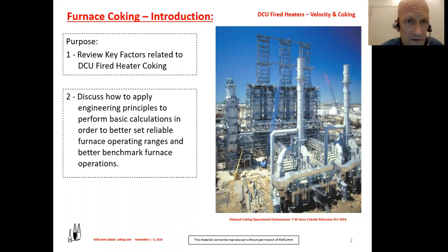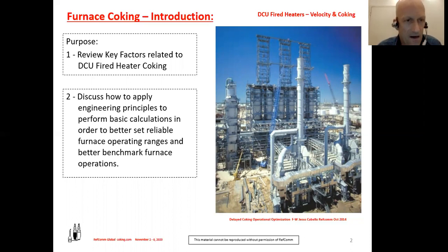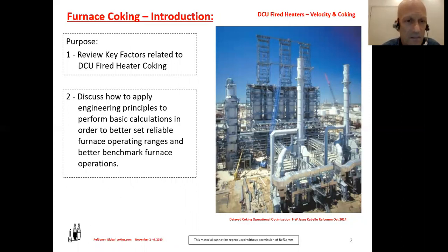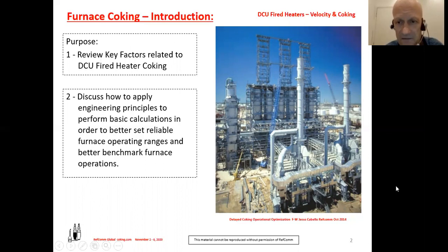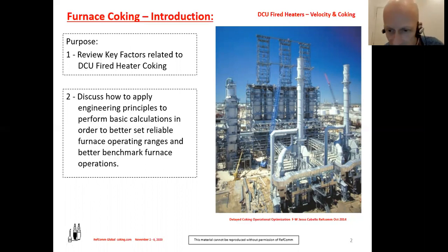We're going to review key factors that play into coking of delayed coker furnace tubes. There are many factors, and we will not be discussing many of them in any detail whatsoever. I'll also be discussing, as a key aspect of the presentation, how to apply engineering principles to perform basic calculations in order to better set reliable furnace operating ranges and to better benchmark furnace operations throughout your company or the industry. On this slide, you also see a photo of a basic delayed coker unit — a six-drum coker with two furnaces in the foreground and a main fractionator, courtesy of a presentation by Jesus Cabello in 2014 with Foster Wheeler.